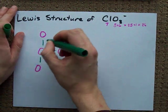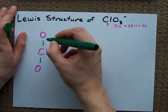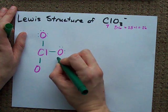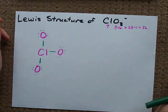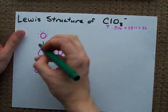Fill your outer atoms with a full octet. 2, 4, 6, 8, 10, 12, 14, 16, 18, 20, 22, 24.